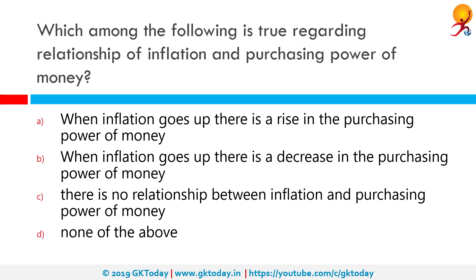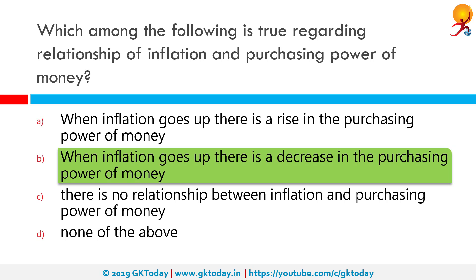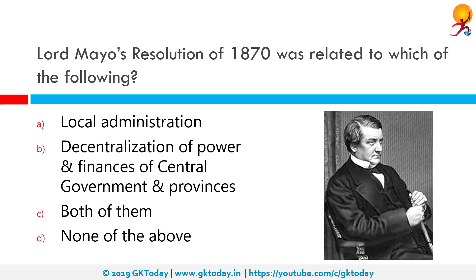Which among the following is true regarding the relationship of inflation and purchasing power? The correct answer is: when inflation goes up, there is a decrease in purchasing power. Higher purchasing power means more goods can be bought with the same amount of money, which increases demand for goods, causing prices to rise — hence with more purchasing power there will be inflation.